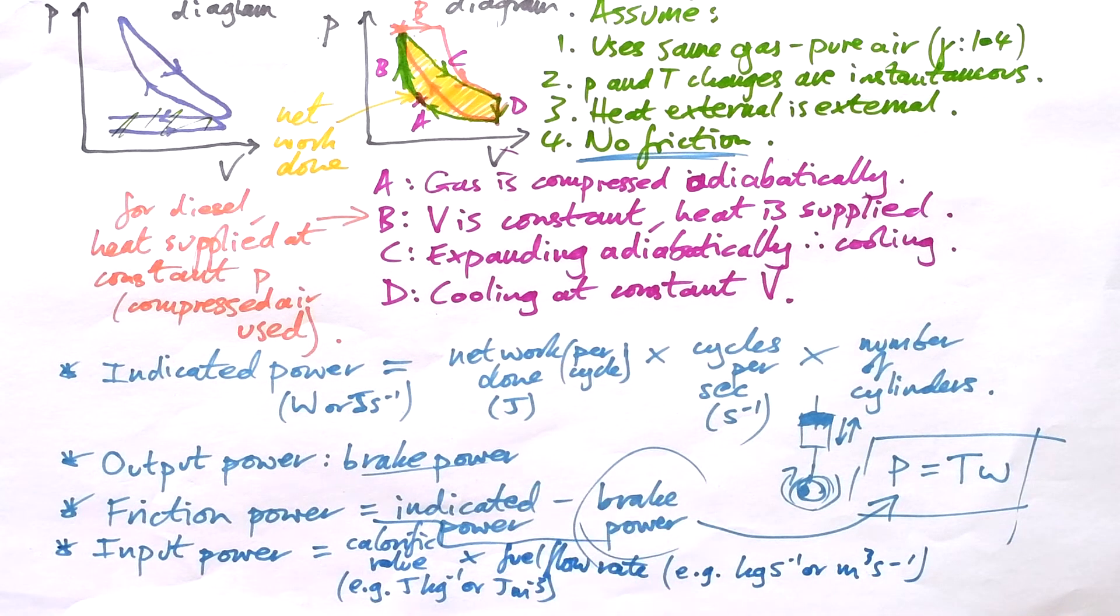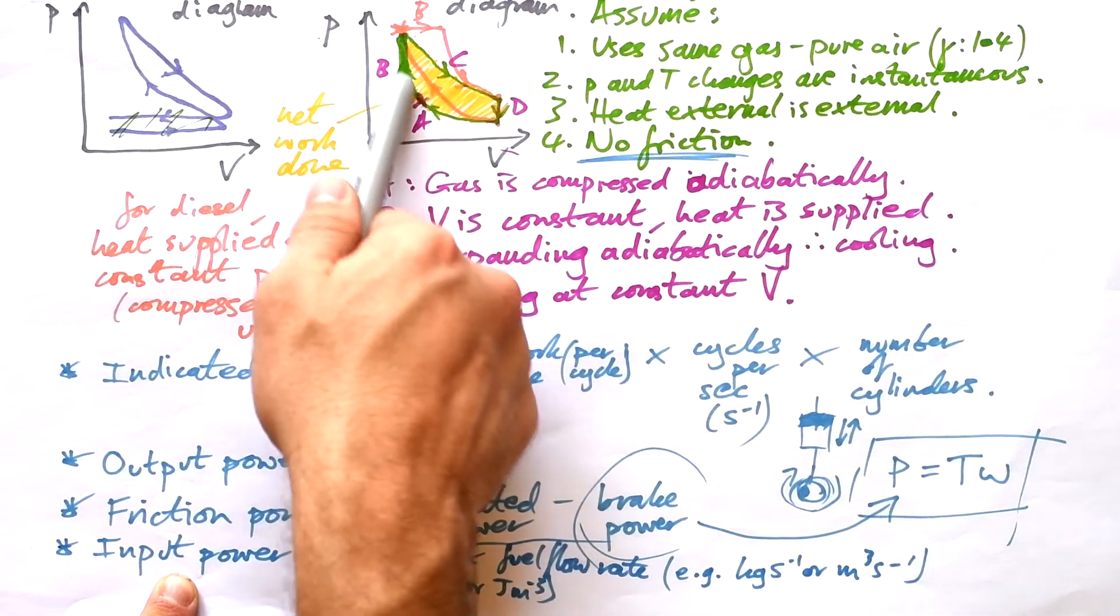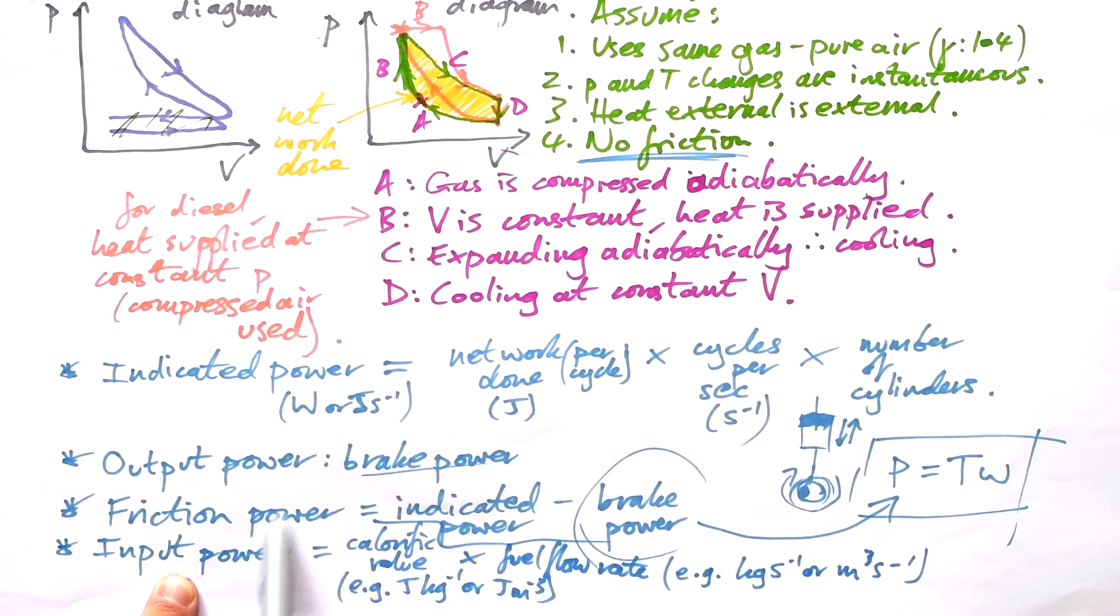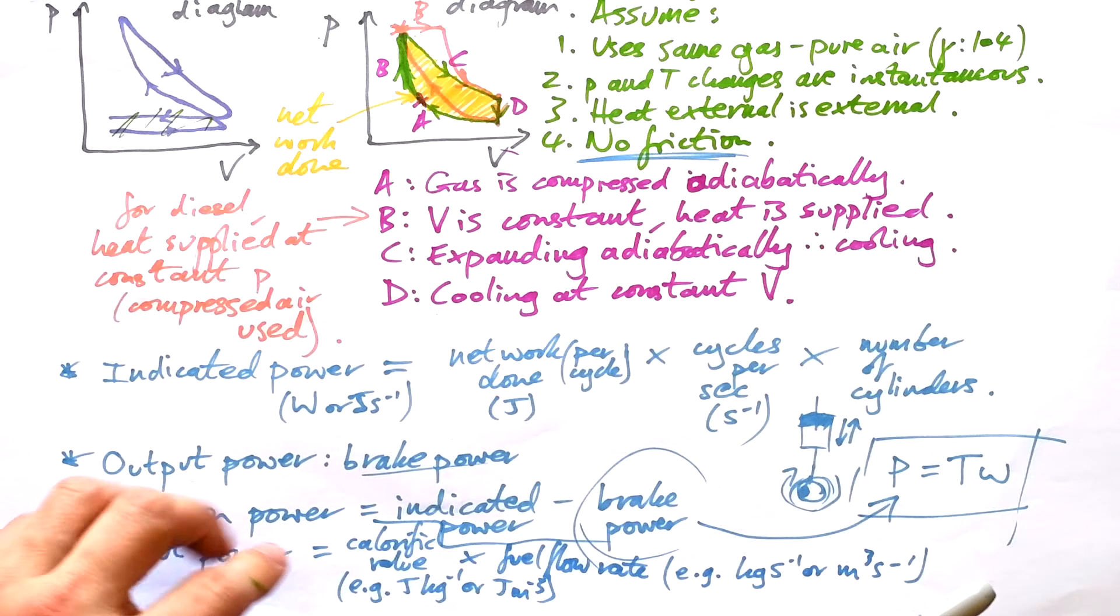So let's just go over this. Input power, that's the power that comes from the fuel itself. That then enables the engine to do work, and that's your net work done. And that's not going to be 100% efficient. We'll go into that in a second. And then we have our output power after that. And then finally, we can calculate our friction power, which is the difference between them.